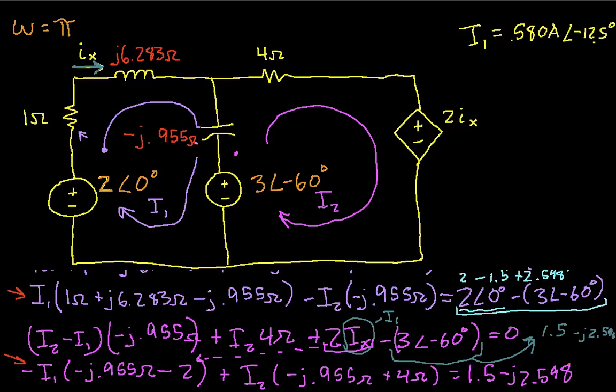So the last step would be to say that I1 of T, which is also the same as Ix of T, is 0.580 amps cosine of pi T minus 12.5 degrees. So there you have it, an example of applying mesh analysis using AC steady state analysis. So hopefully you found this useful.